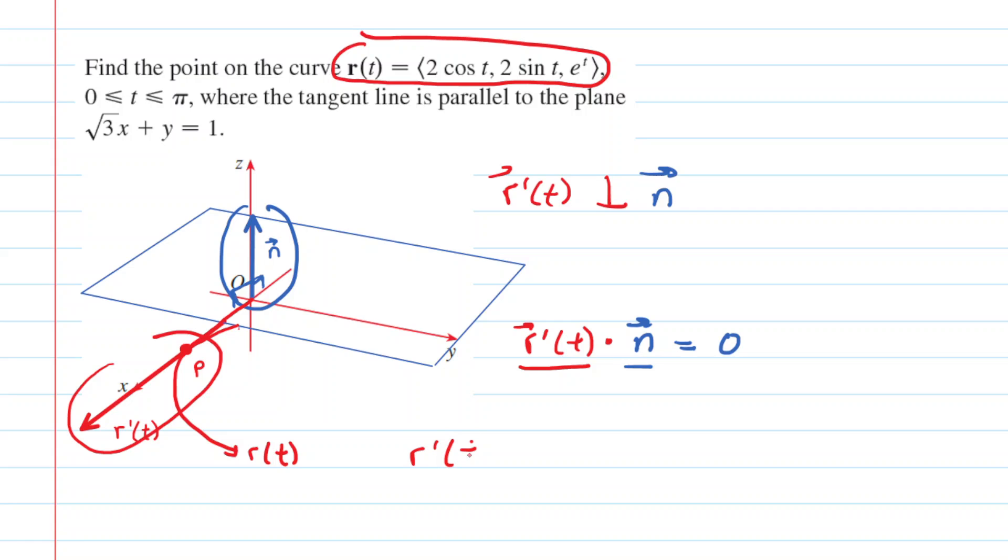r'(t) is simply the derivative of the components. The x component is 2cos(t), whose derivative is -2sin(t). The y component is 2sin(t), whose derivative is 2cos(t). The z component is e^t, whose derivative is e^t. So r'(t) = ⟨-2sin(t), 2cos(t), e^t⟩. This is our tangent vector function.